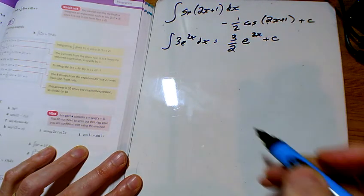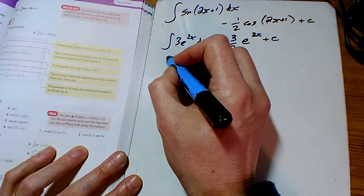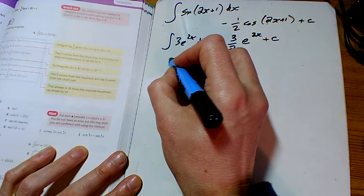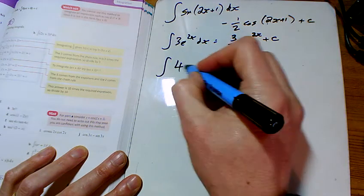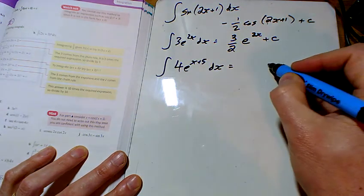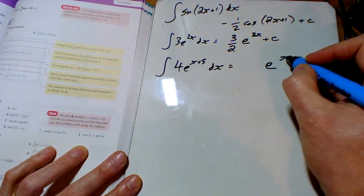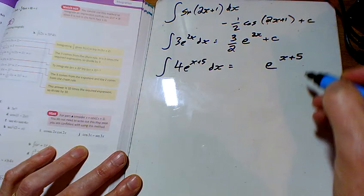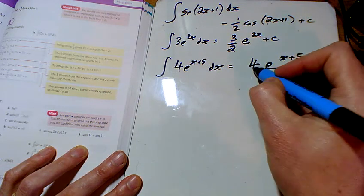For C, I've got 4e to the x plus 5, and so the e integrates to an e, the x plus 5 stays the same. There's already a 4 there and I'm going to divide by the number of x's, which is 1, so I'm finished there.